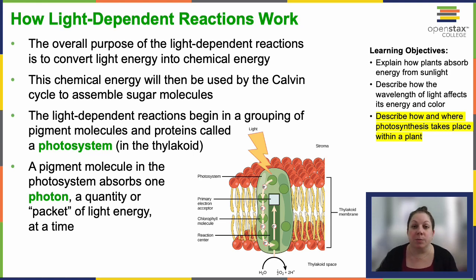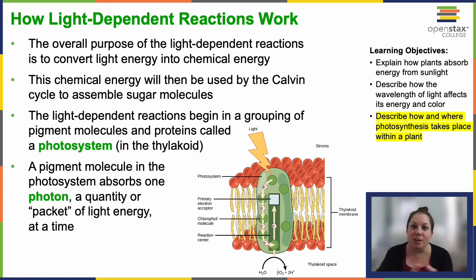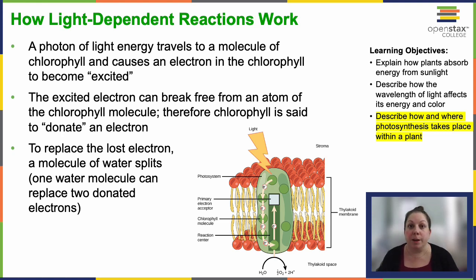The reaction initiates within something called a photosystem, which is a collection of pigment molecules and proteins located inside the thylakoid membrane. Each photon of light absorbed by a pigment excites an electron in the chlorophyll causing it to detach — this process is called electron donation. To replenish that lost electron, water molecules are split, generating O2 and hydrogen ions within the thylakoid space. Each water molecule that splits provides two electrons to replace those donated by the chlorophyll, so we have to keep feeding electrons back into the system.